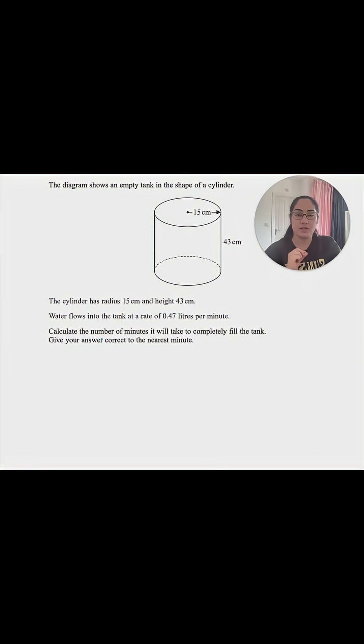In this case, the cross section is a circle. The area of a circle is πr², and we're going to multiply that by the height. So that's the formula for the volume.